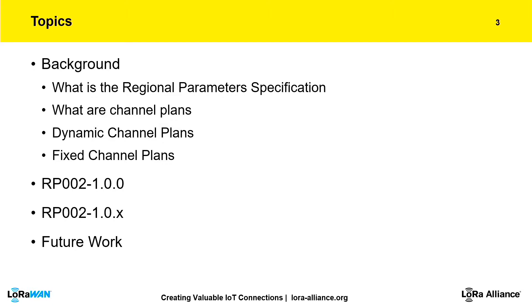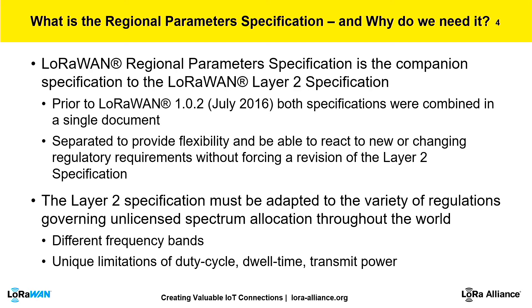So, a little bit of background: there's a lot of confusion when it comes to understanding what the regional parameters document is and how it gets applied in different regions. I'm going to do my best to make that clearer. You're not alone if you find it confusing — I still find some of the plans confusing myself. We'll also talk about the specification we recently published in November, the one we're publishing this quarter, and what we have on the horizon for the working group.